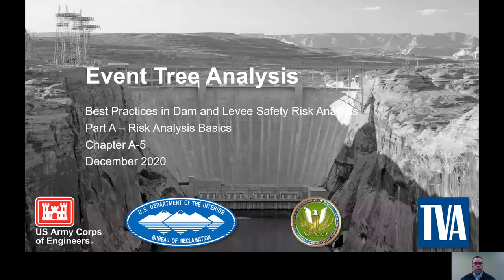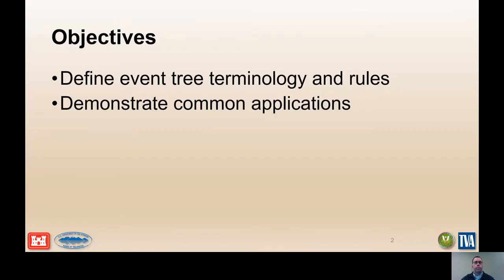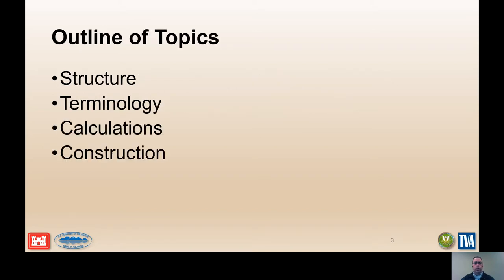This presentation is for Chapter A5, Event Tree Analysis. The objectives are to define event tree terminology and rules, and demonstrate common applications. The outline consists of the structure, terminology associated with event trees, calculations, and construction.